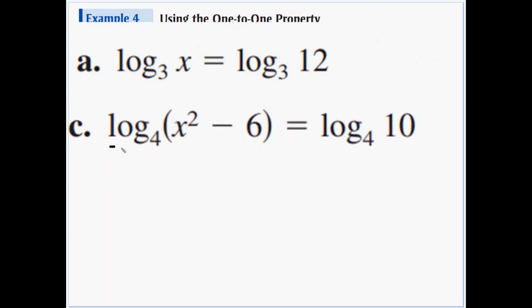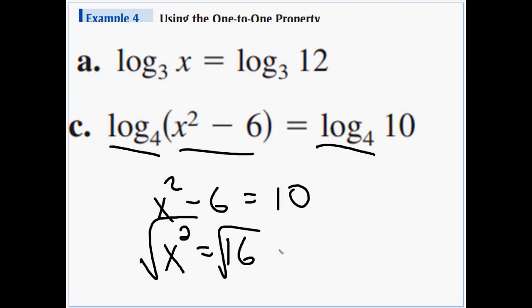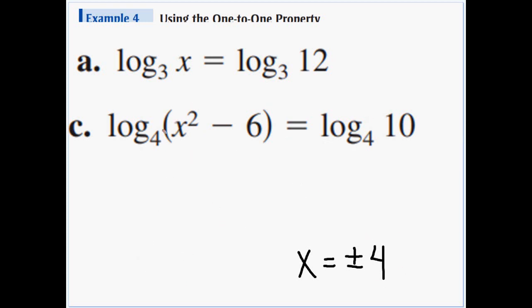Letter c, last one. I see a squared in there, don't get worried. They're both log base 4s. Log base 4 of this equals log base 4 of that, so we can set x squared minus 6 equal to 10. We're going to add 6 to both sides, x squared is 16, and then take the root of both sides. Don't forget the plus and minus, so x would equal positive or negative 4. When we put the 4 in there and square it, it would always be positive, so that's fine.